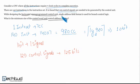Now it is said single address field format is used for branch control logic. Then what is minimum size of control word and control address register? I would like to highlight the difference between control word and control address register.